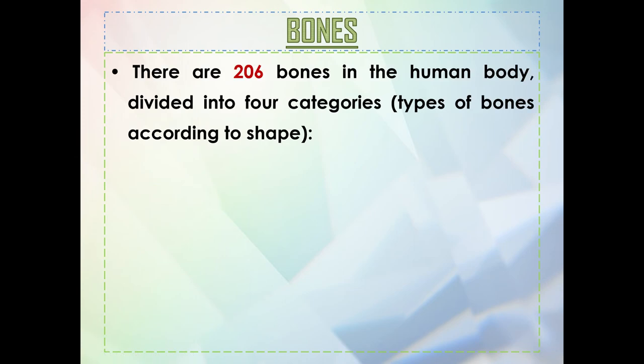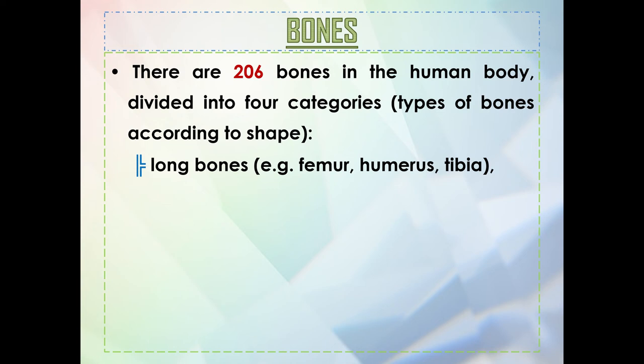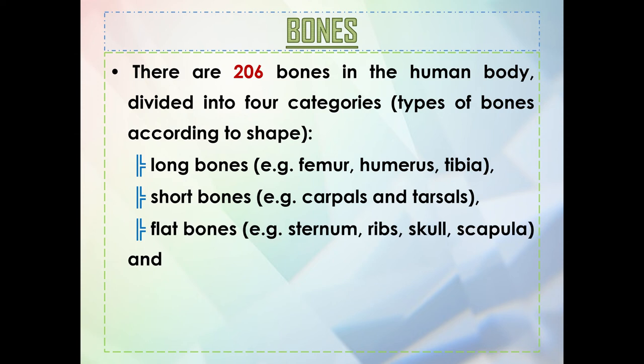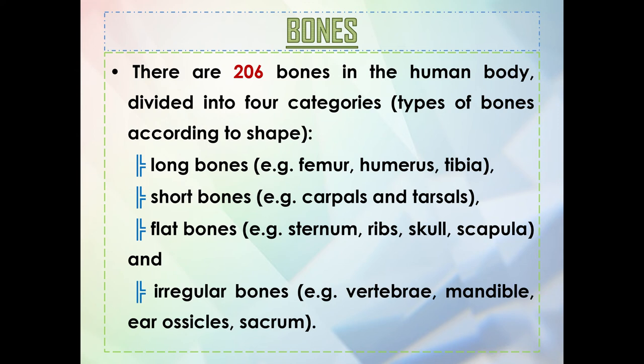We know that there are 206 bones in the human body, divided into four categories based on shape. You have long bones — for example, your femur, humerus, and tibia. Short bones include carpals and tarsals. Flat bones include the sternum, ribs, skull, and scapula. And irregular bones include the vertebra, mandible, ossicles, and sacrum.